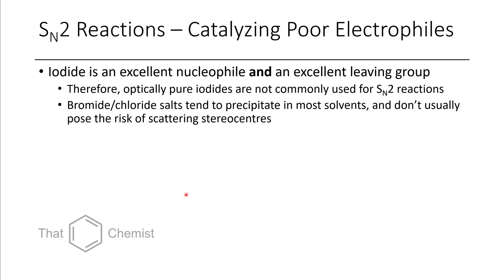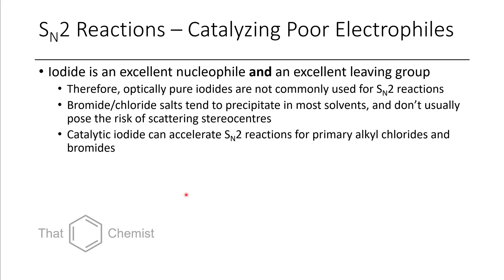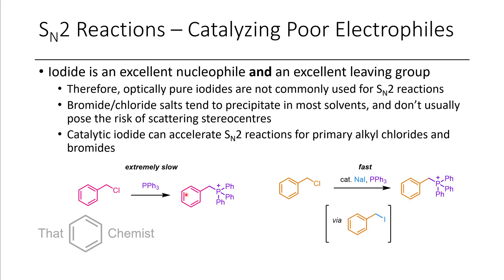Iodide salts tend to be quite soluble in polar solvents such as acetonitrile or acetone. So if you have a primary alkyl chloride and you want to substitute it with something like a phosphine, this would be a quite slow reaction. However, if you add in a little bit of iodide, this will accelerate the reaction drastically—from a reaction that would take multiple days at reflux to one that could take two hours at reflux. The use of iodide for substitution of primary halides is often quite advantageous, and if you're not sure a reaction will work, people will often just add a catalytic amount of iodide anyway.